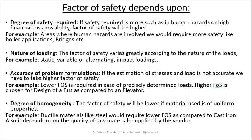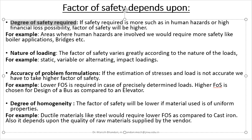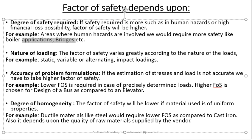The first important criterion is the degree of safety required. If the safety required is more — such as when human hazards or high financial loss possibilities are involved — the factor of safety will be higher. For example, if we design a bridge or a boiler, the human hazards involved are very high, and that is why we have to be on the safer side, and the factor of safety will increase.